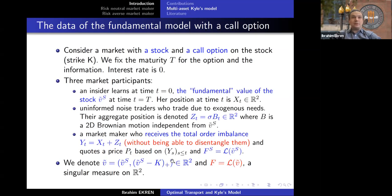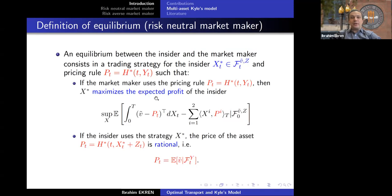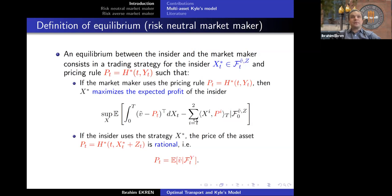I denote the vector payoff of stock and option as F, a singular measure on R². We seek an equilibrium — a pair (X*, P*). X* must be adapted to the insider's information; P* must be adapted to the market maker's information and will be a Markov function of Y. The equilibrium conditions are: if the market maker uses pricing rule P*, then X* is the optimizer for the insider; and if the insider uses X*, the price is rational in the sense that it equals the conditional expectation of the fundamental value.